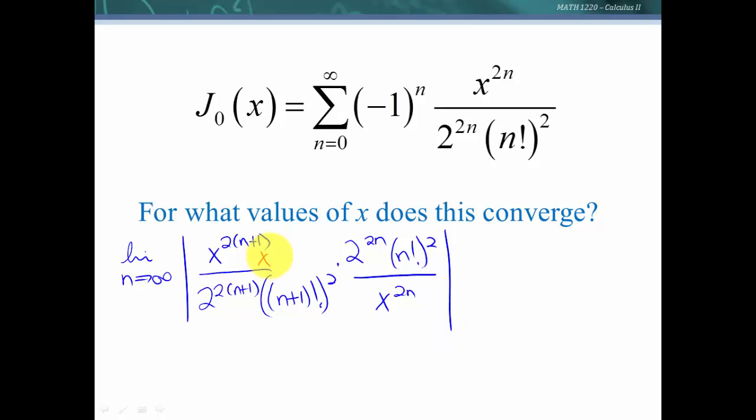This is x to the 2n times x squared, this is 2 to the 2n times 2 squared, and (n plus 1) times n factorial, and they both need squareds on them. Now let's reduce what we can. We can cross off 2 to the 2n with 2 to the 2n, n factorial squared with n factorial squared, x to the 2n with x to the 2n. Let's see what we've got left.